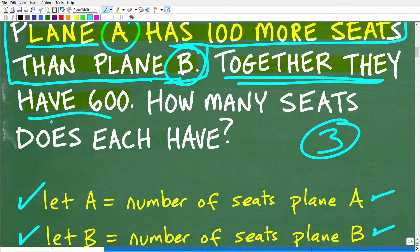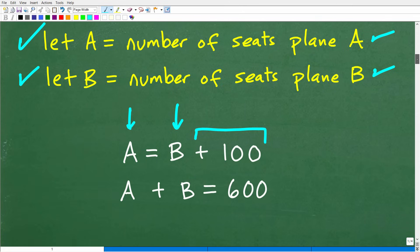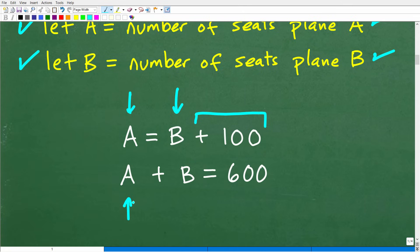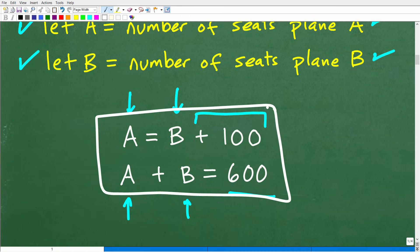Okay, so that is the first part, and then the second part is very easy. Together they have 600 seats. So together, well whatever amount of seats Plane A has, if we add that to the total amount of seats in Plane B, together they have 600 seats. So right now we have what we call a system of equations, and specifically this is called a system of linear equations. This is stuff that you learn like in Algebra 1, first year Algebra.